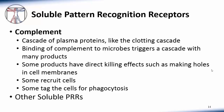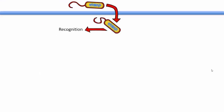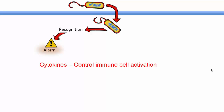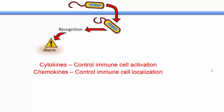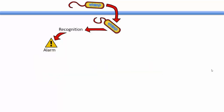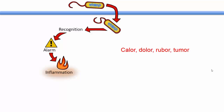When cells detect pathogens, they become activated and sound the alarm. Alarm signals produced by activated cells include cytokines, which can activate other immune cells; chemokines, which control immune cell migration and localization; and various other vasoactive and inflammatory agents. These alarm signals stimulate inflammation, the classic signs of which are calor, dolor, rubor, and tumor — or in English, heat, pain, redness, and swelling.